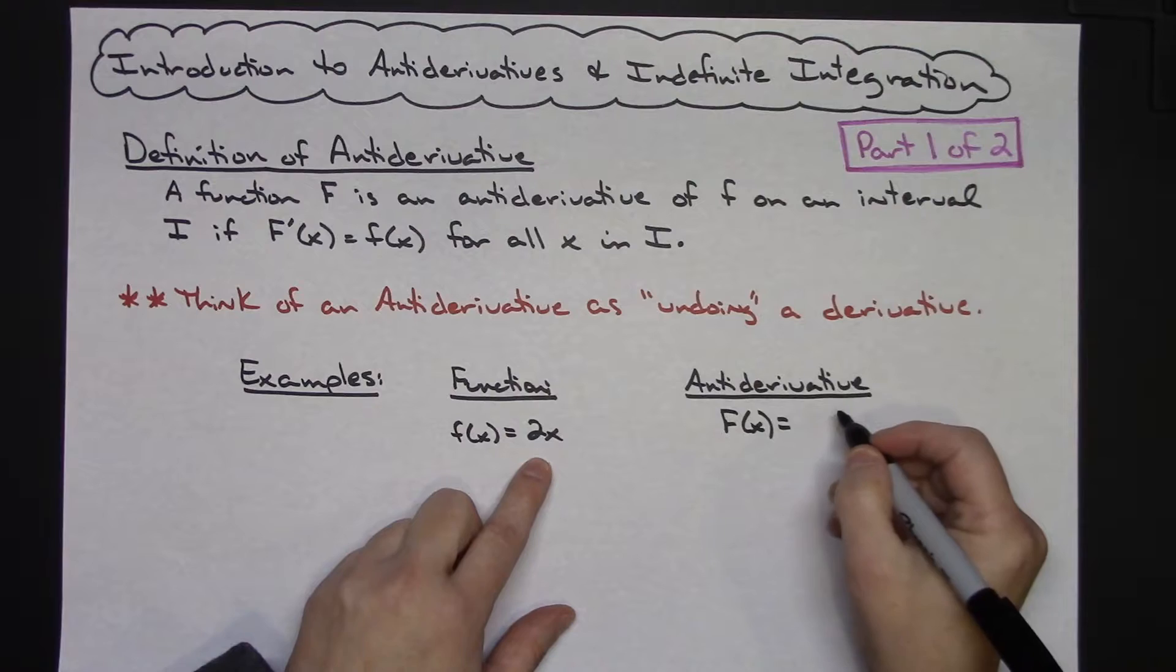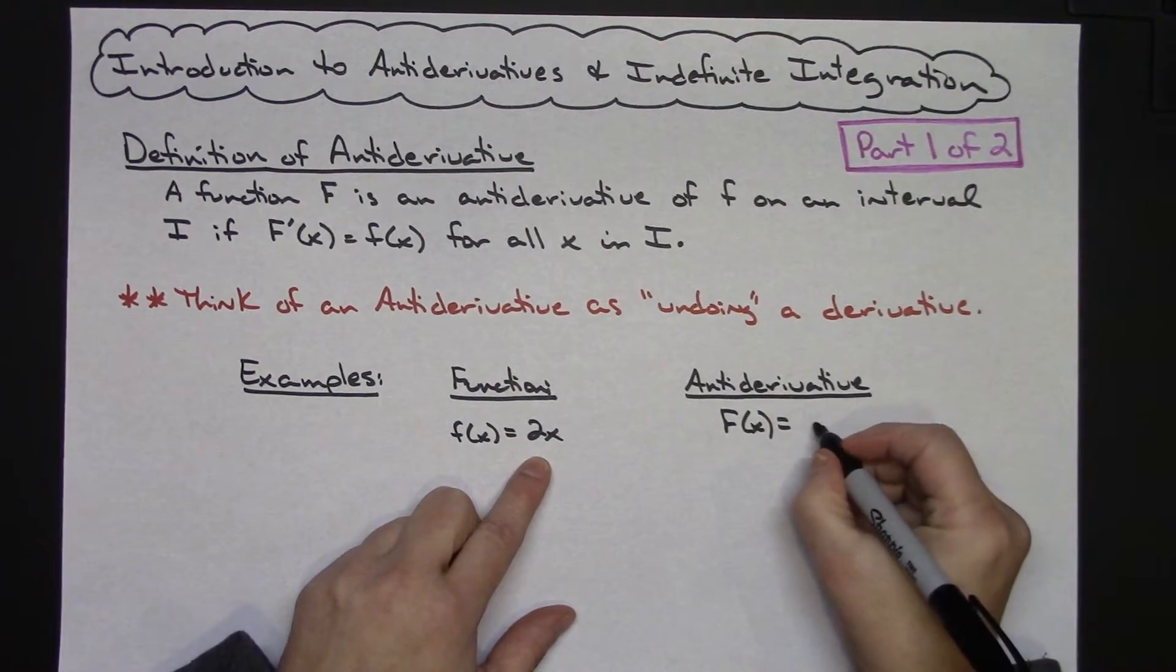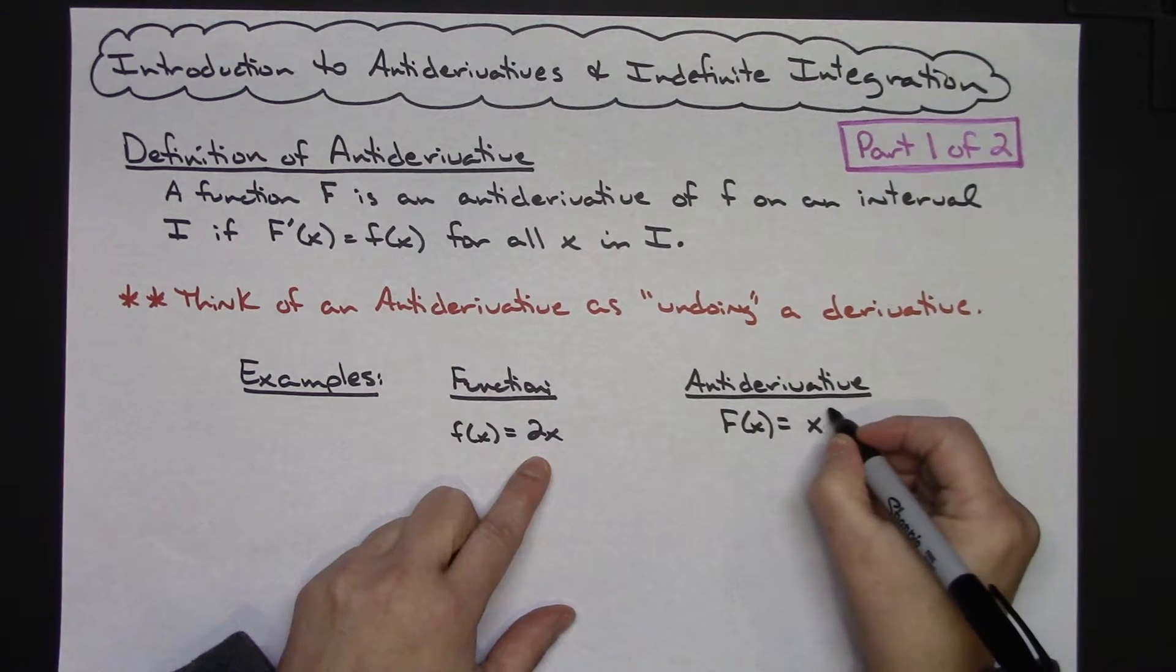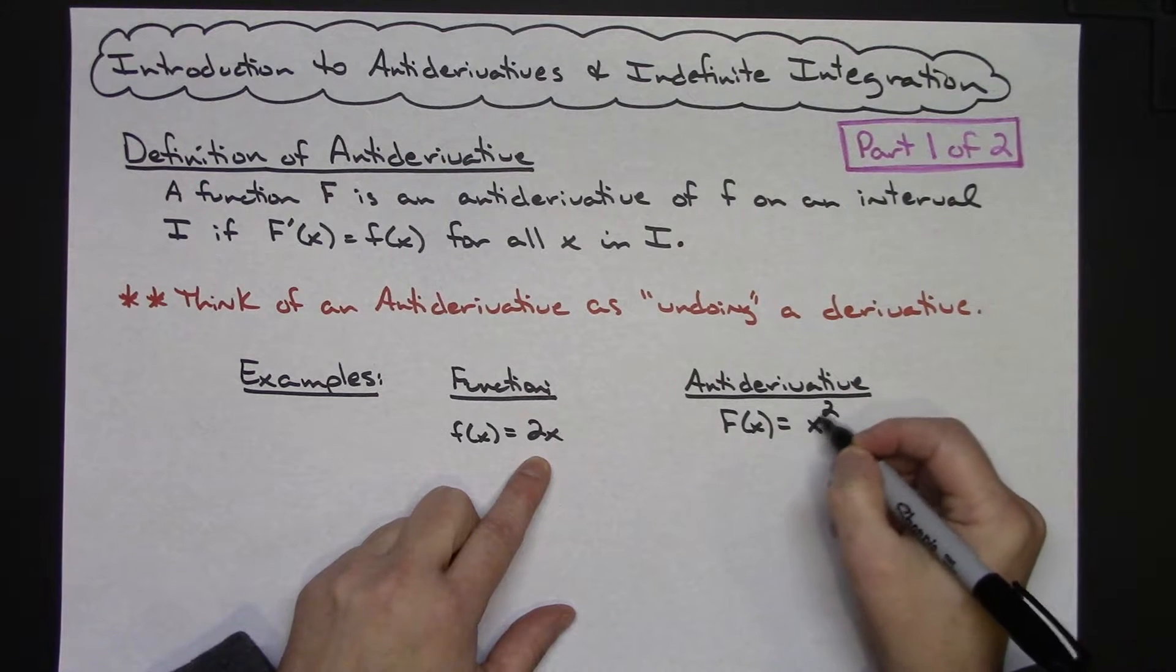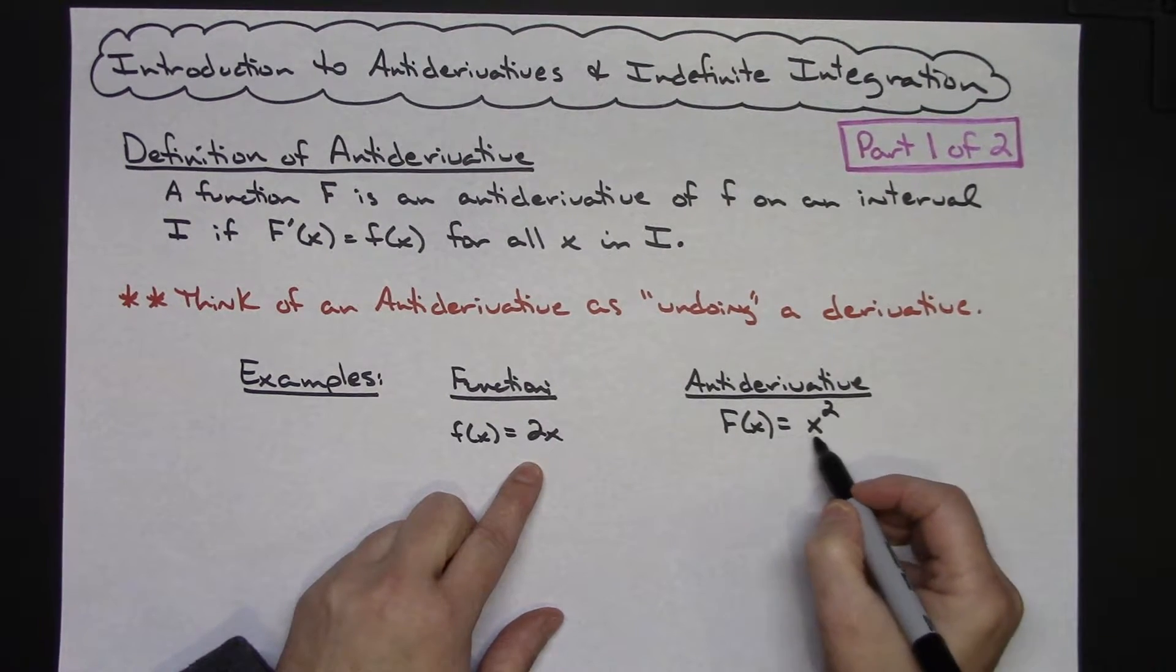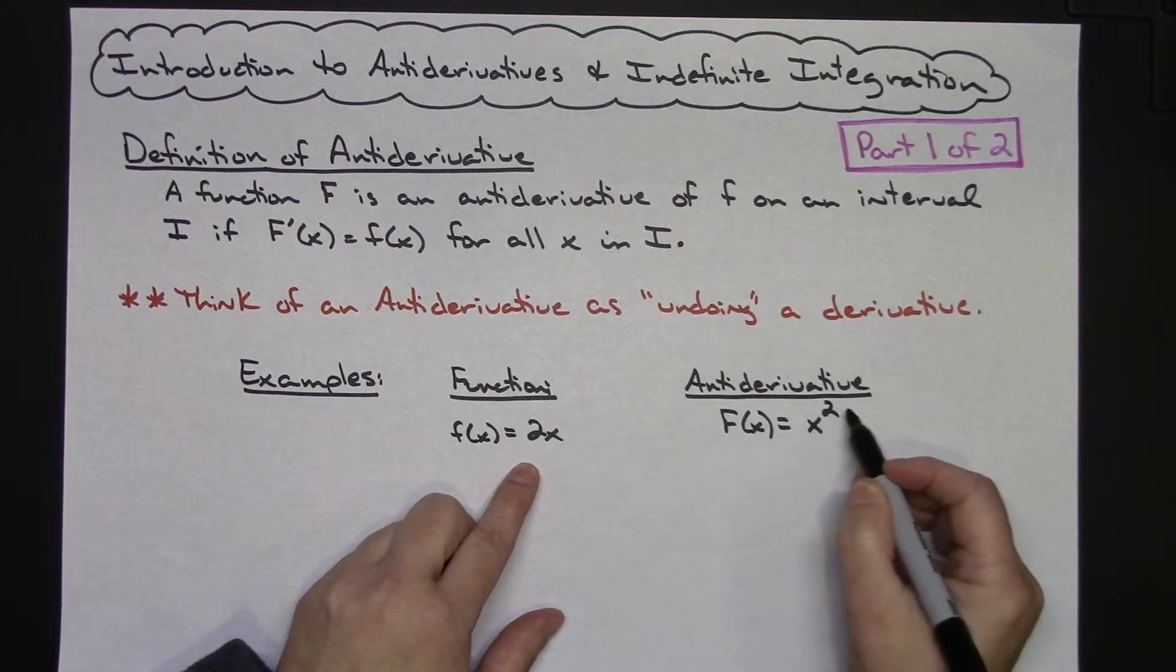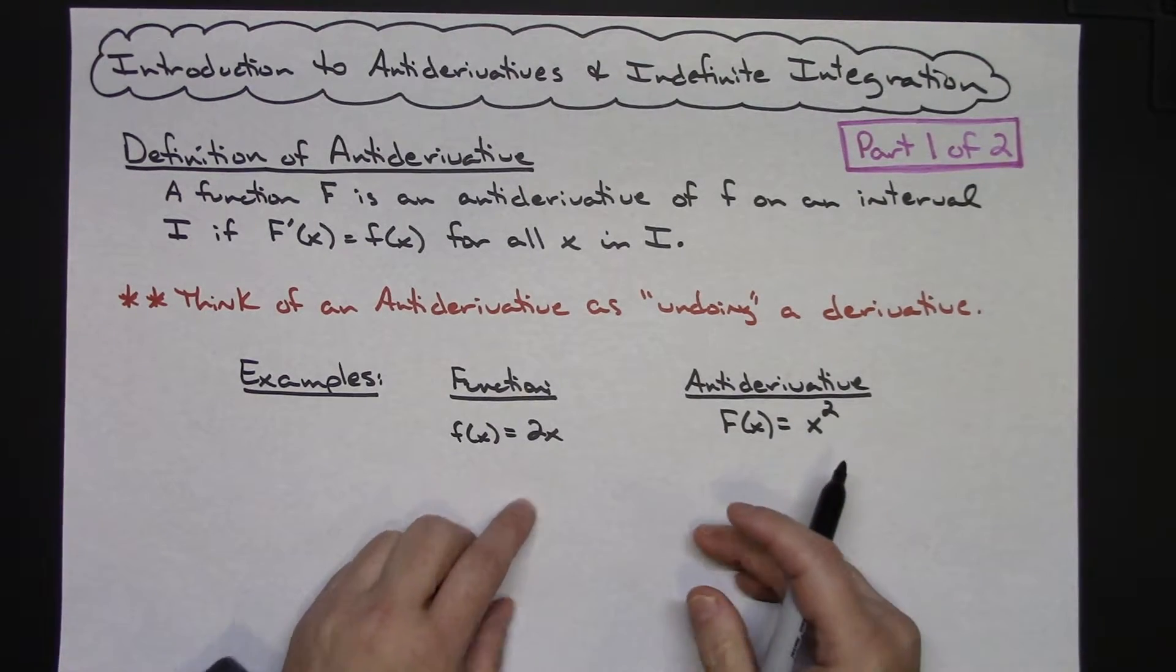So thinking power rule, pulling that exponent down in front and then subtracting 1, I would have had to have an x squared as my antiderivative, because if I take the derivative here, it would be 2x - pulling that 2 down in front, subtracting 1 from the exponent. So kind of you're undoing your derivative.